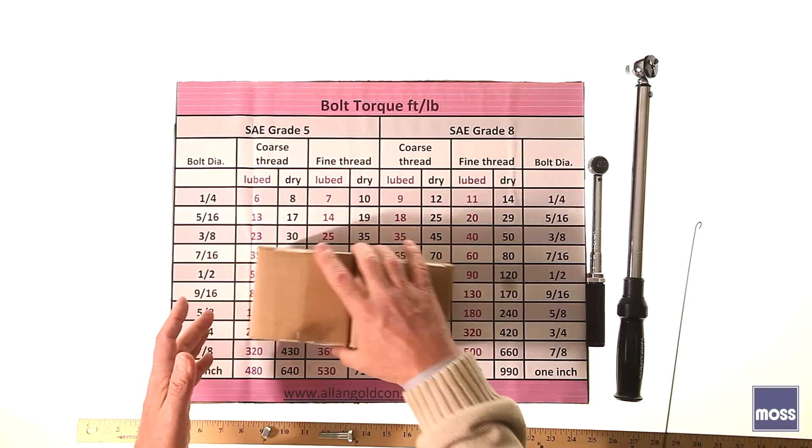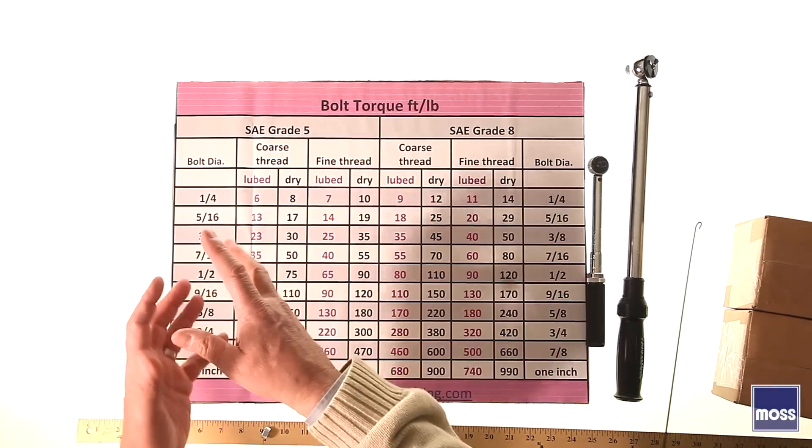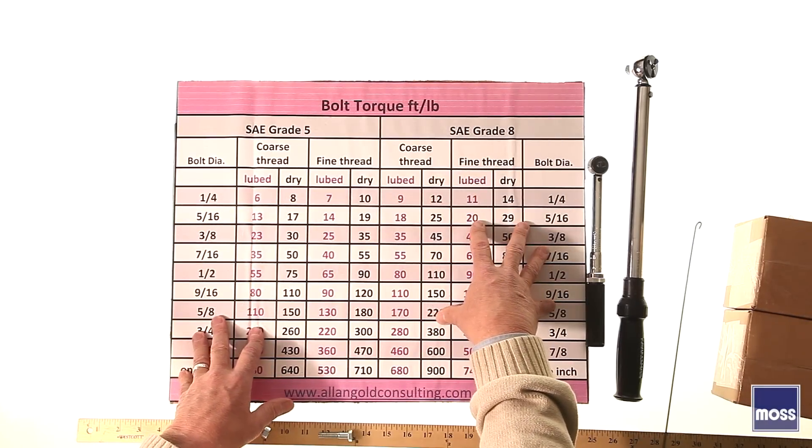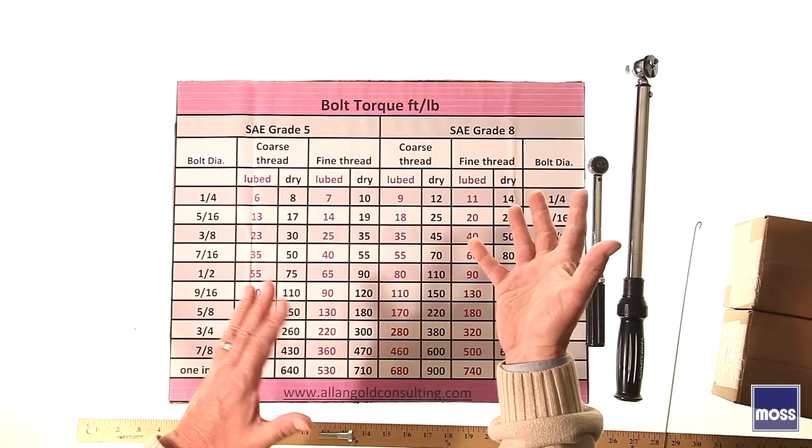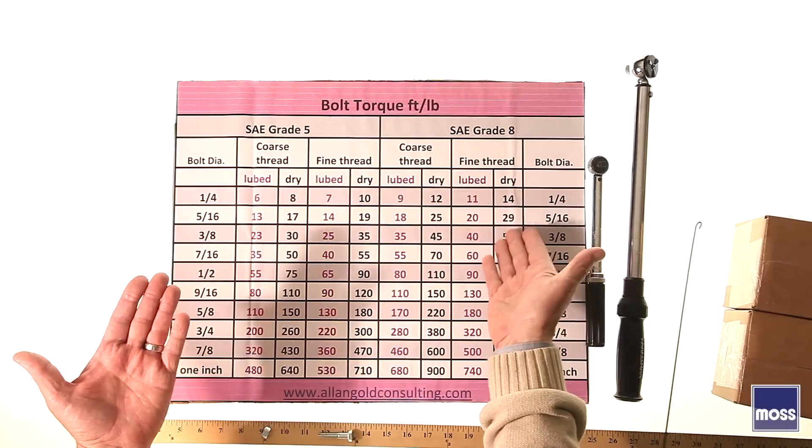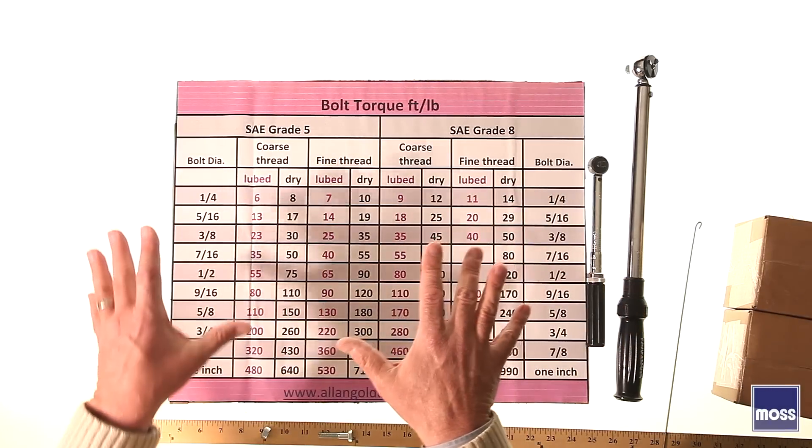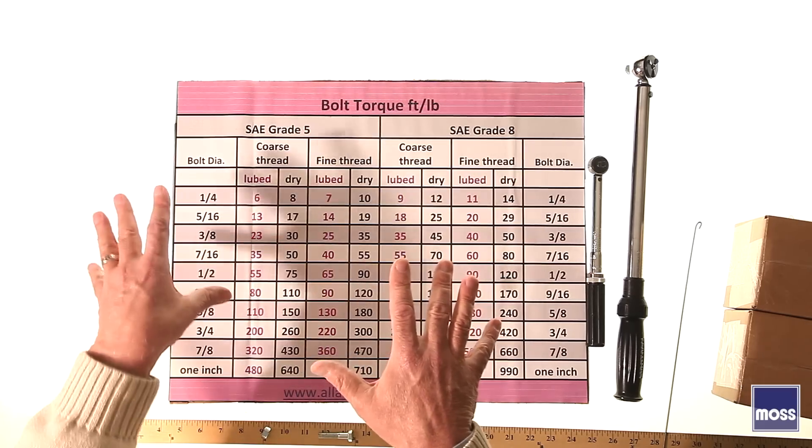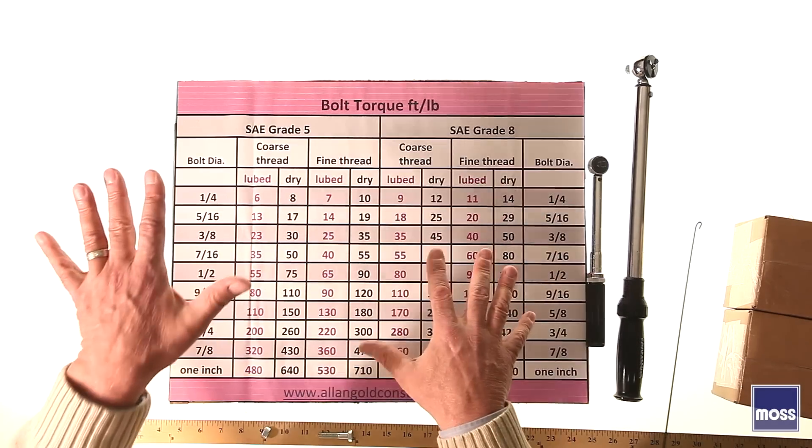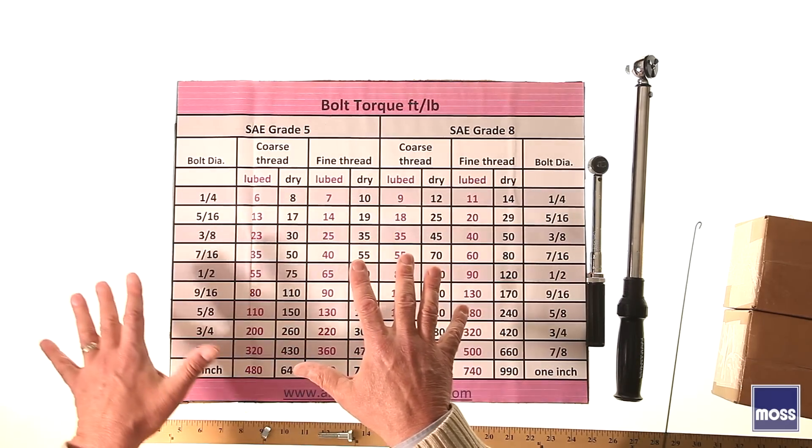Lastly regarding torque, there are times when somebody will have a shop manual and the shop manual will say torque this bolt to a specific foot-pound rating. However, you'll have a chart like this one that we found on the internet and it will have a different reading for the same size bolt. You'll think, I'm confused. The shop manual says one thing. This chart says something different. Which is correct? Well, there are other factors involved. The engineers who designed your car knew what they were doing. If they chose a different torque specification than what would normally be called for, do what the shop manual says. That will be right because they had all the rest of the factors compensated for.